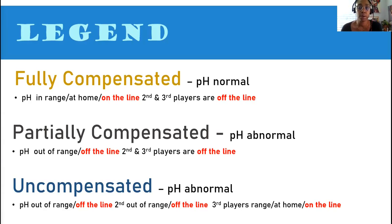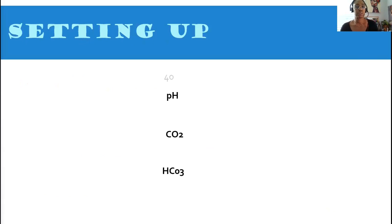Grab a piece of paper. We're going to set up our ABG interpretation. You're going to have a piece of paper. You're going to draw three lines. Your top line is your pH. Second line is your CO2. And third line is your HCO3. And you could draw a line right down the middle.